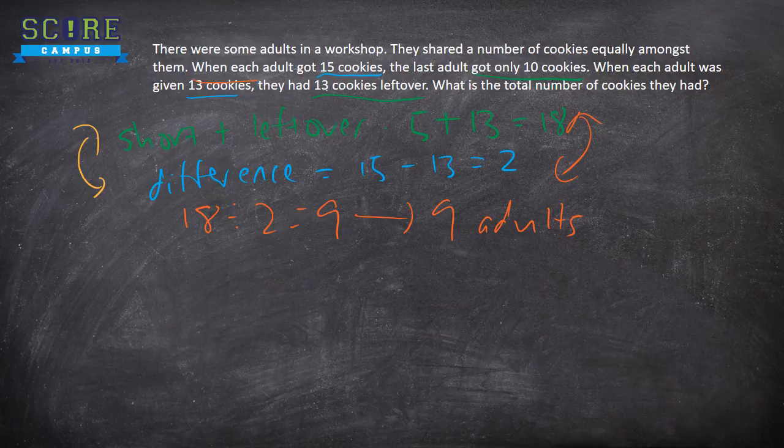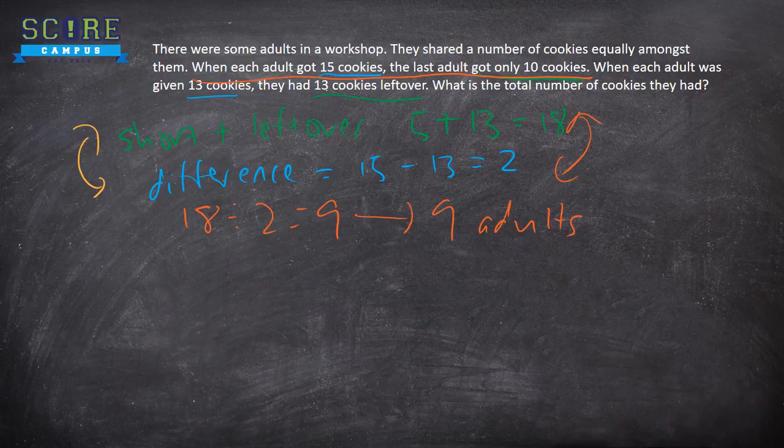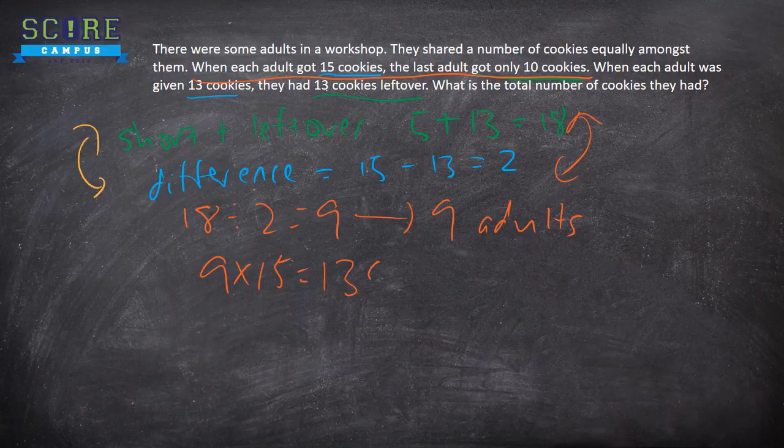So now how to find the number of cookies? Let's use this statement. 9 times 15 equals to 135. 135 because you are short of 5 minus 5 equals to 130.